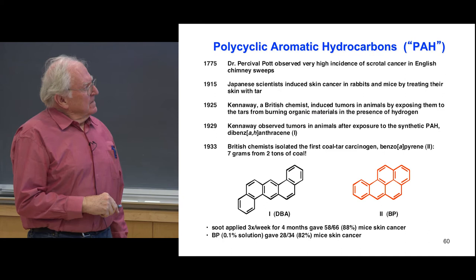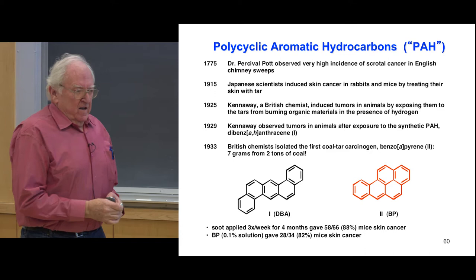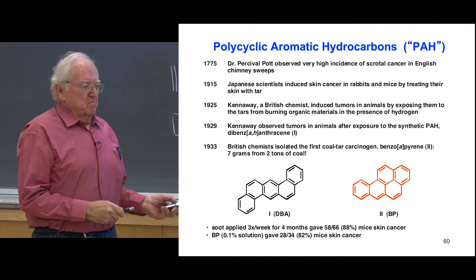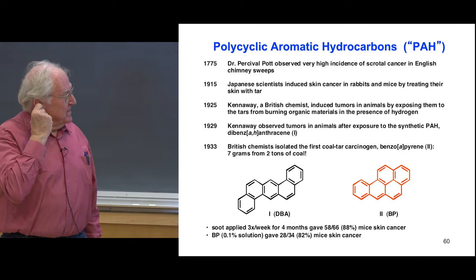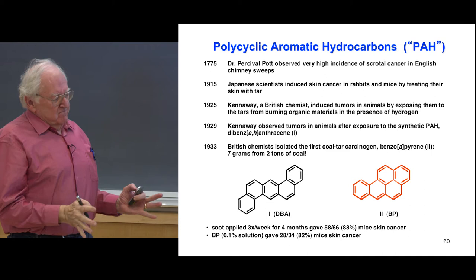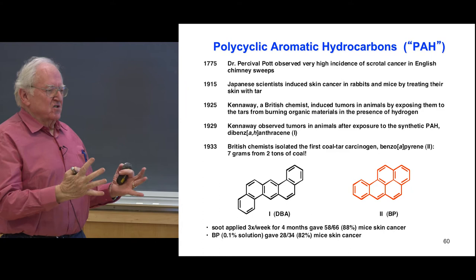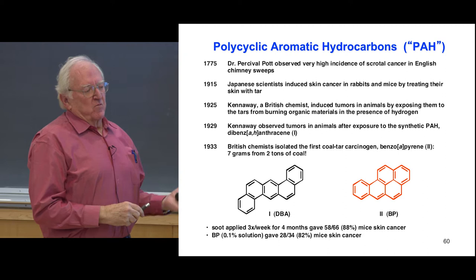The first group of compounds found to cause cancer in animals goes way back to 1775, when English doctor Dr. Pott noticed high scrotal cancer in chimney sweeps. These men and boys would go into chimneys, scrape out the soot and creosote, the tars would get on their skin, they wouldn't bathe, and they would get this very rare cancer that spread and killed them. He didn't know the chemicals were involved, but knew the black tar in your fireplace was causing this cancer.